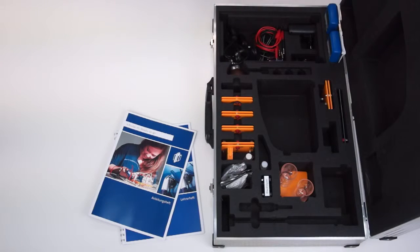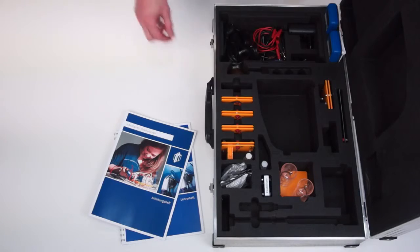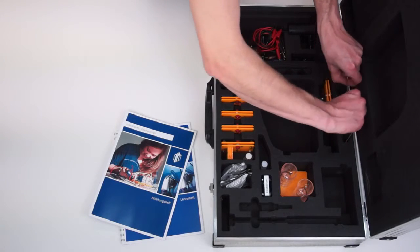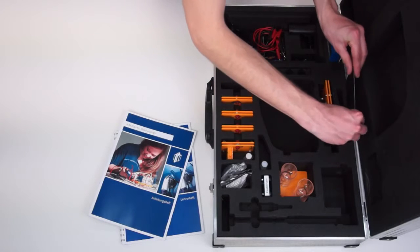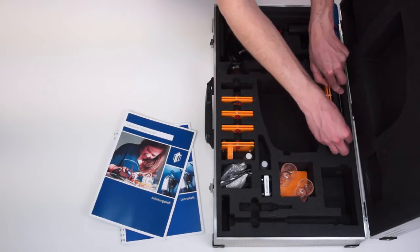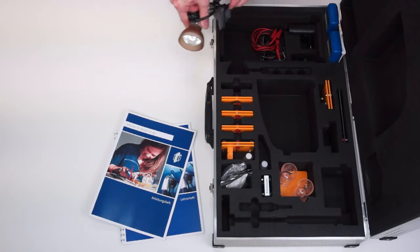The electrolyser can be used in two different ways. The first option is that it can be operated with electric current from the solar module. For adequate lighting there is a lamp available.